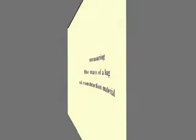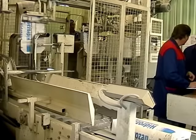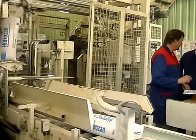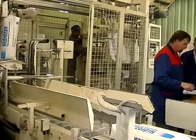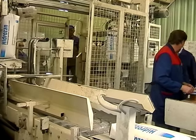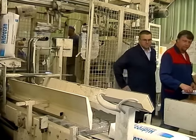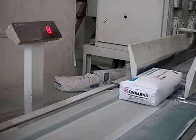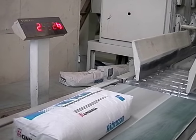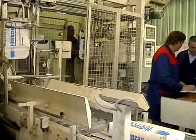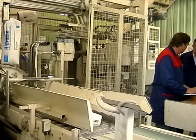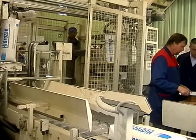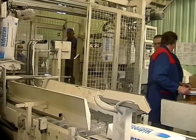Mass measurements are of course ubiquitous in the world that surrounds us. Balances are therefore used in trade and in production. Here is an example of how the mass of a bag of construction material is measured in a factory as it rolls off the conveyor belt. The routine measurement you see is probably typical for those in physics regarding procedure and traceability.